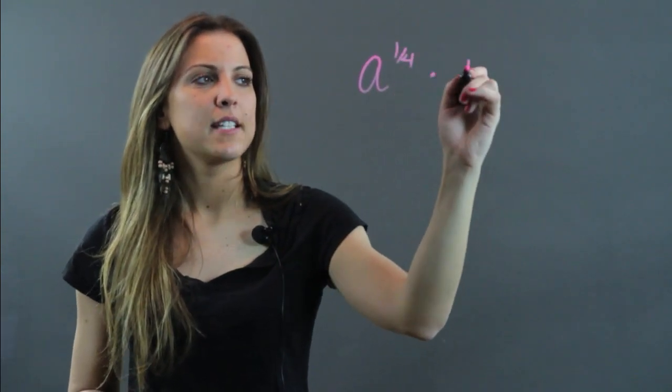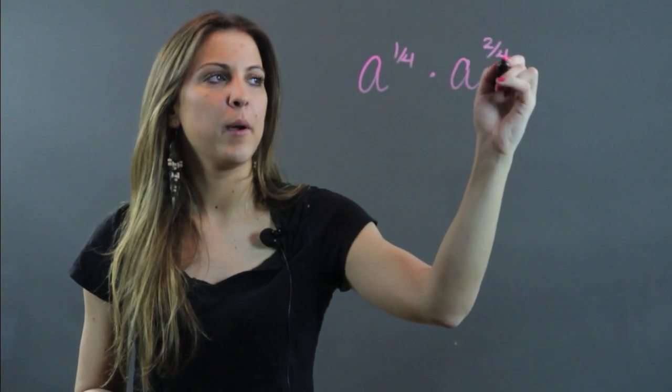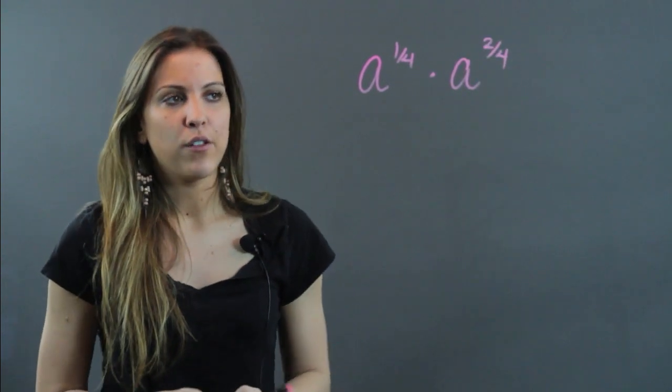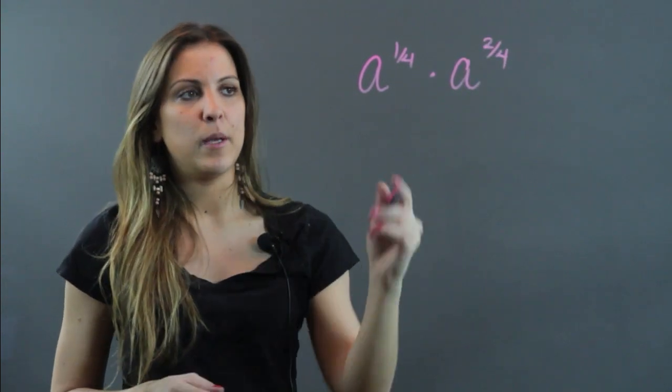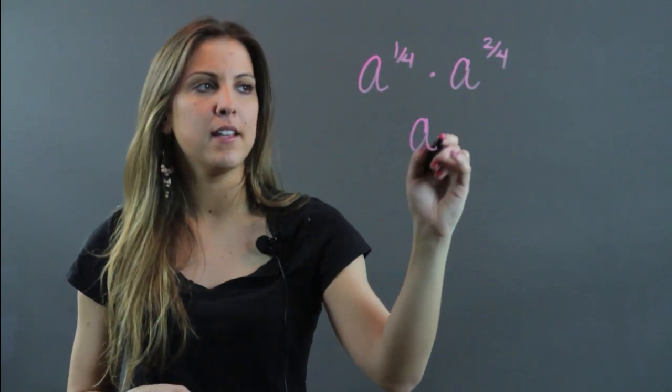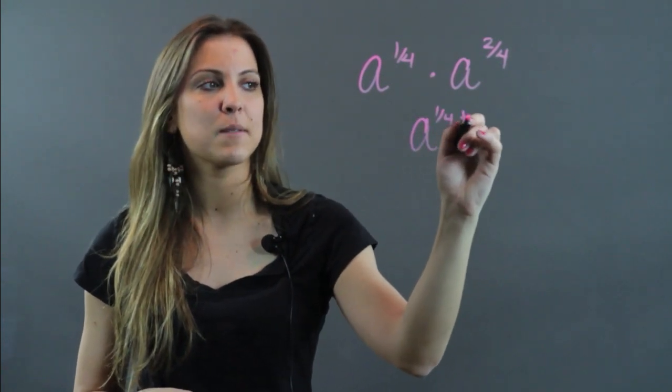So if I have the expression a to the 1/4 power times a to the 2/4ths power, what I'm going to do is just follow the multiplication law of exponents, which tells me that if my base is the same, I'm going to keep that base and I'm going to add the exponents.